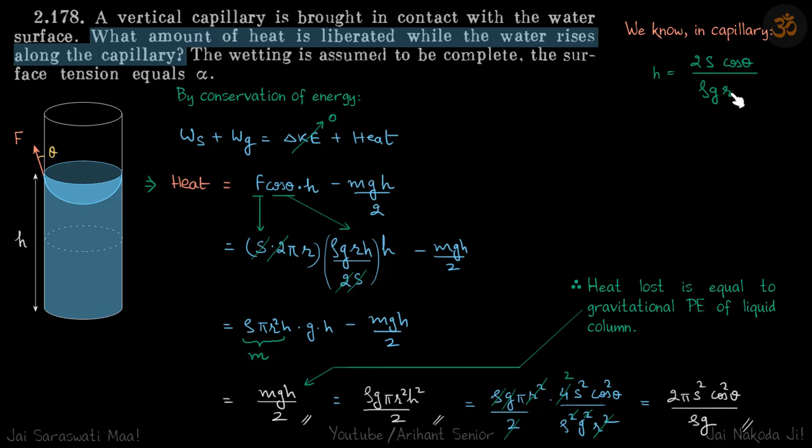The other way of writing is we can eliminate H and r by using this equation. So Hr we can write as 2S cos θ by ρg, square of that will do, and that simplifies to this. So all three are correct answers, just different ways of writing the same thing.